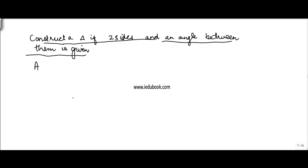Let's say you are given that AB is equal to 6 cm, BC is equal to 4 cm, and angle ABC is equal to 60 degrees. Construct a triangle.